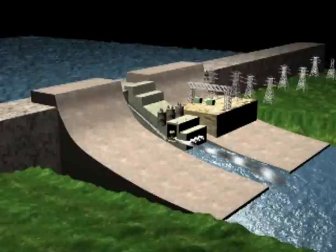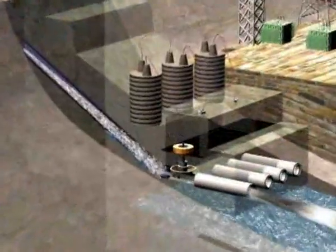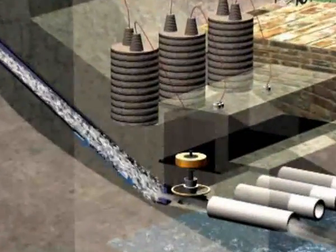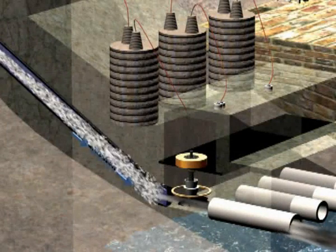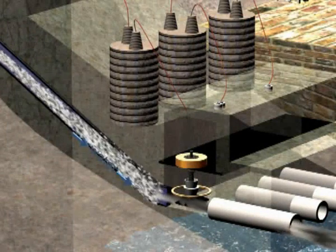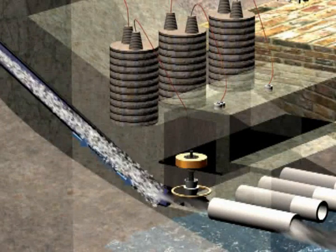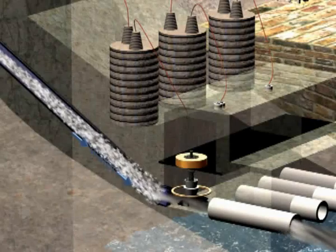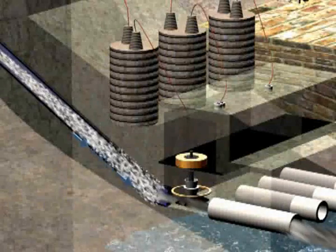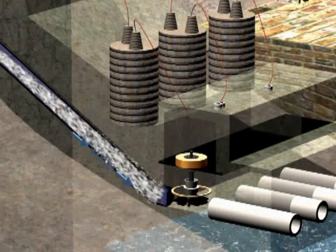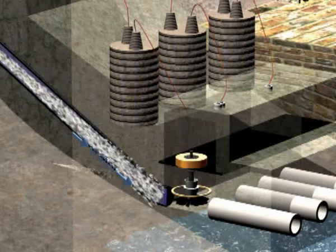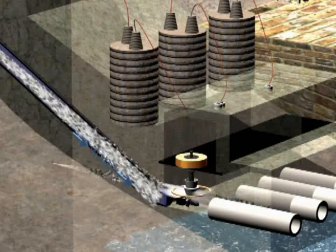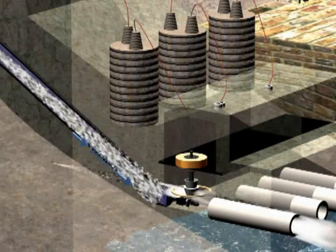Water at the higher level is collected in the forebay, which flows through the plant intake into a pipe called the penstock, which carries it down to the turbine water wheel at the lower water level. It is the pressure and flow that drives the turbine, which is connected to the generator.